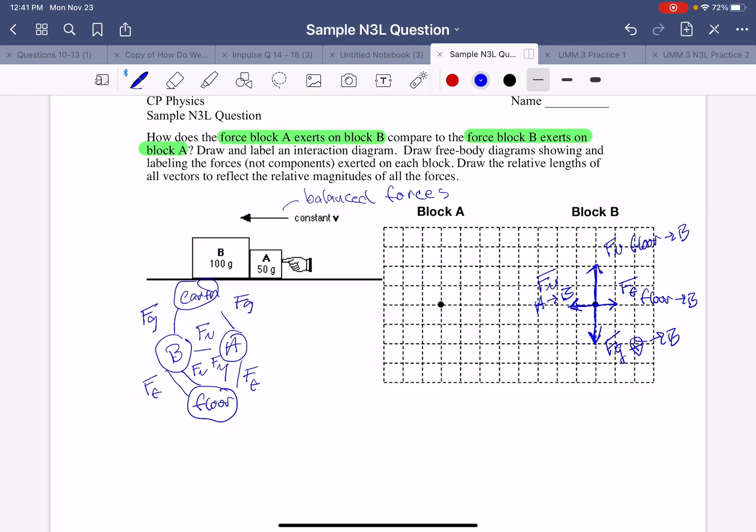Block A has twice the mass. So that means its gravitational force would have to be twice the length. So that's the gravitational force of the earth on A. And since there's no change in motion vertically, my vertical forces have to be balanced. So the normal force of the floor on A.